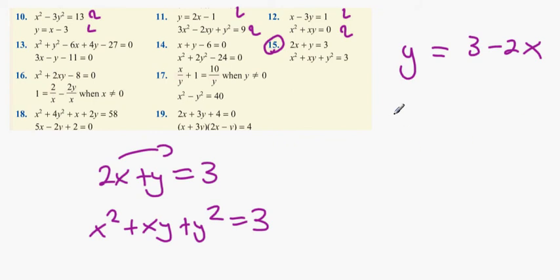If I get x on its own, it's going to be 2x equals 3 minus y. x equals 3 minus y over 2.